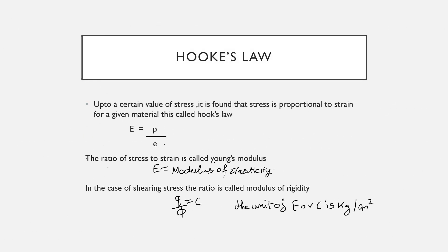Now let us discuss Hooke's law. Up to a certain value of stress, it is found that the stress is proportional to strain for a given material — this is called Hooke's law. The ratio of stress to strain is called Young's modulus or modulus of elasticity. In the case of shearing stress, the ratio is called the modulus of rigidity, with units of kg per centimeter square.